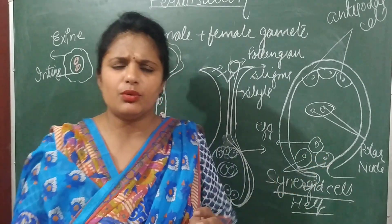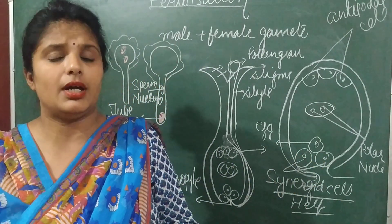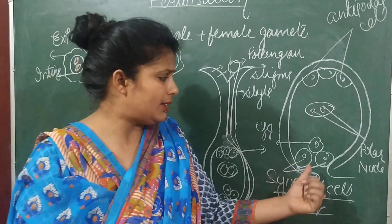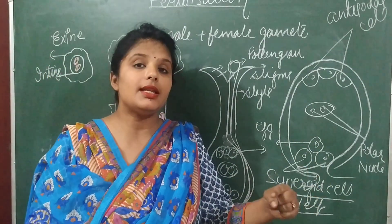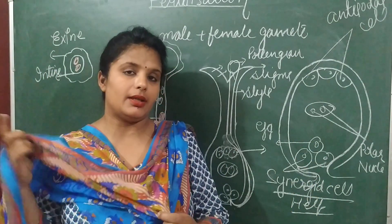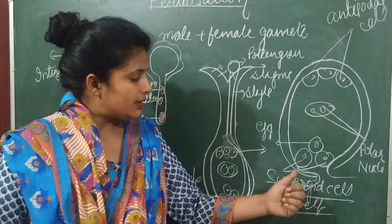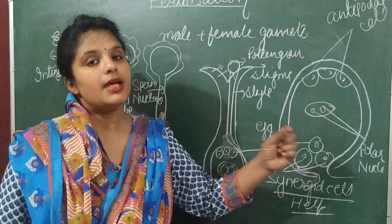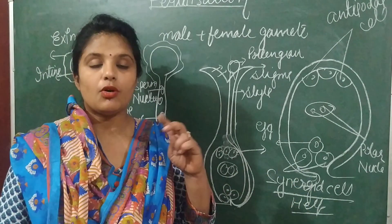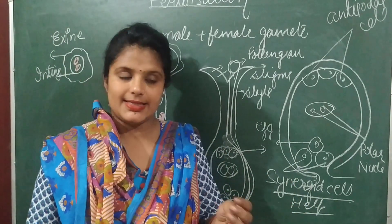These synergid cells are also known as helper cells because they help during fertilization. They do not have much function on their own, but in case the egg cell is not able to combine at the time of fertilization, then the synergid cells help in fertilization and perform the role of the egg cell.